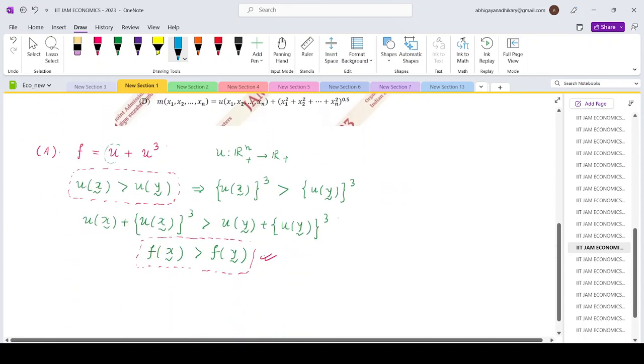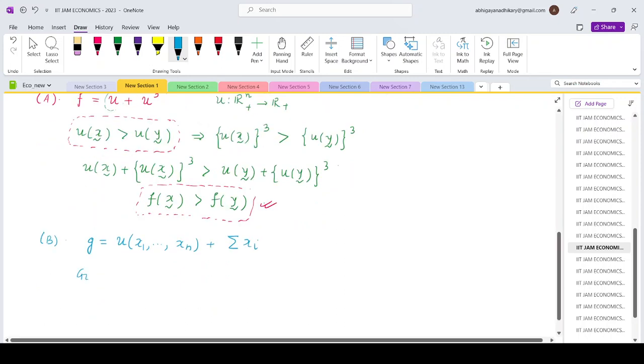Let's have a look at the second function. So G is basically utility of X1, X2, Xn plus summation Xi. So we are basically considered two bundles such that utility of bundle X is greater than utility of bundle Y.